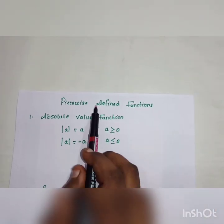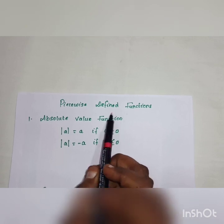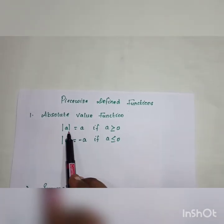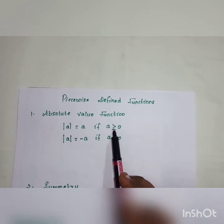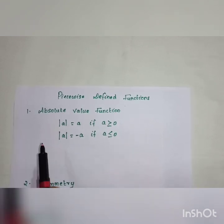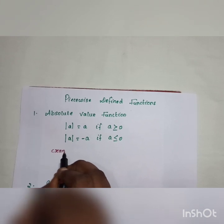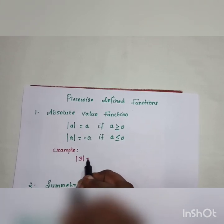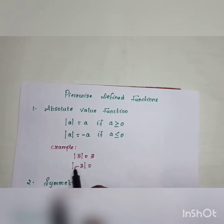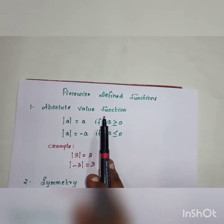The next heading is piecewise defined functions. The first topic is the absolute value function. The definition is: |a| = a if a ≥ 0, and |a| = -a if a < 0. For example, |3| = 3, and |-3| = 3.